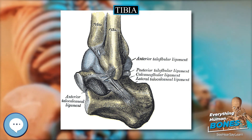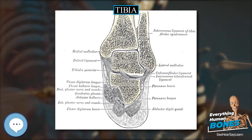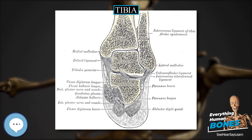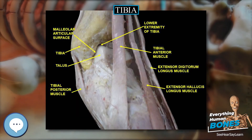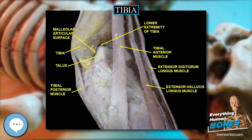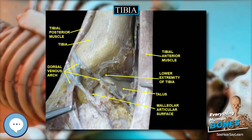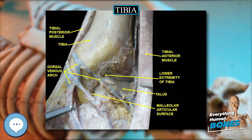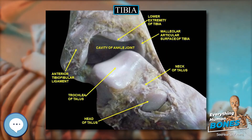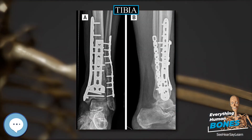The distal tibiofibular joint, or tibiofibular syndesmosis, is formed by the rough, convex surface of the medial side of the distal end of the fibula, and a rough concave surface on the lateral side of the tibia. The part of the ankle joint known as the talocrural joint is a synovial hinge joint that connects the distal ends of the tibia and fibula in the lower limb with the proximal end of the talus.